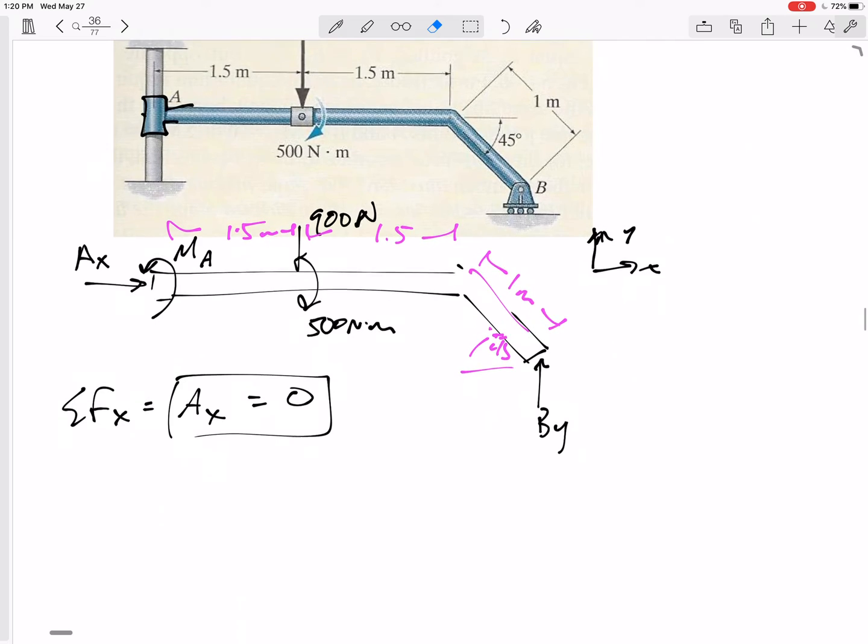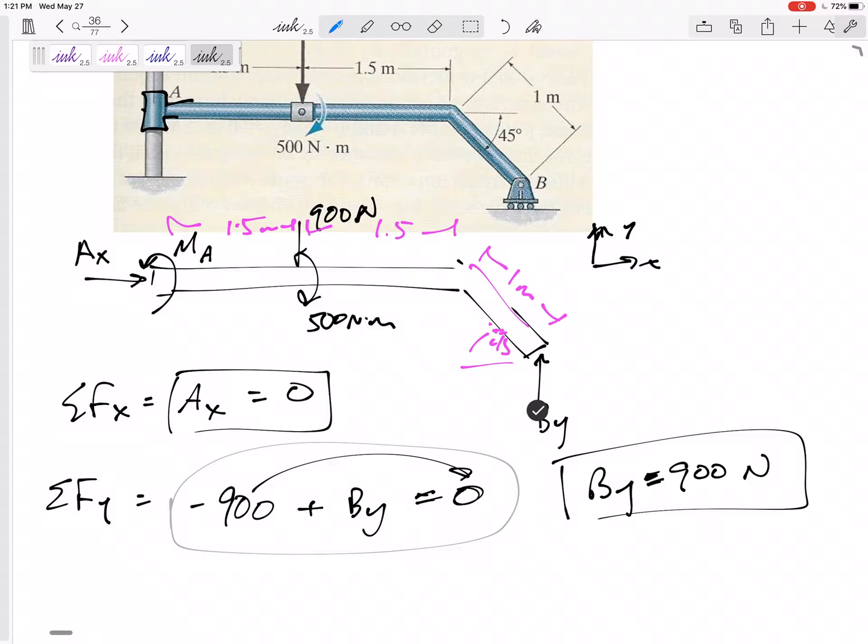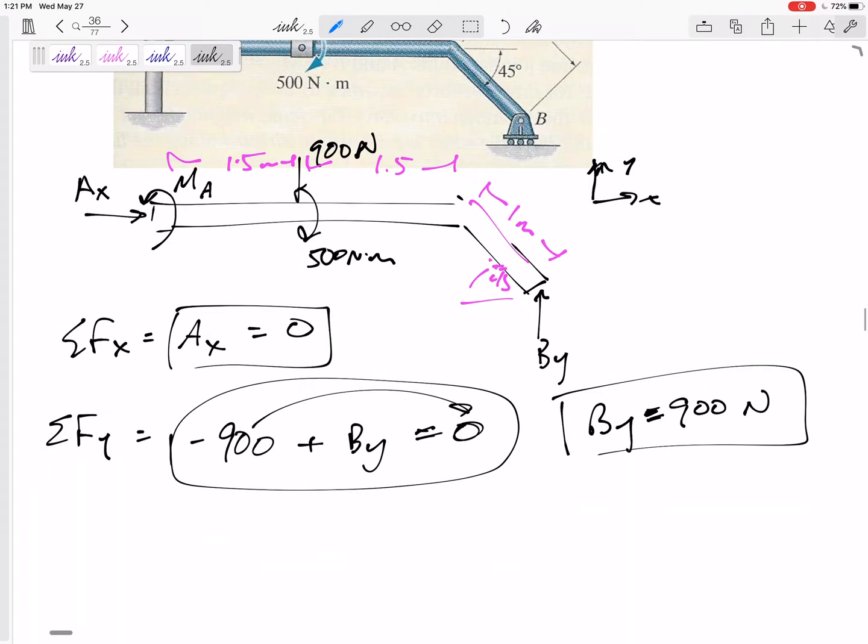Let me sum the forces in the Y direction. I've got negative 900 positive BY. Now be careful. If you forget to write equals zero, those are the only forces in the Y direction. Some people would say, oh, BY is equal to negative 900. No, no, no. It's equal to zero. And BY is equal to positive 900. So that's why I would always write equals zero. And then here is an equation that you are solving. BY is equal to 900 Newtons.